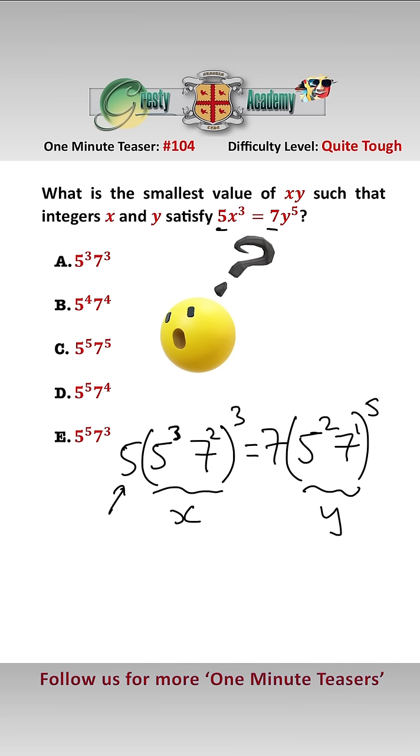therefore the smallest x is that and the smallest y is that. So therefore the smallest xy is 5 to the power of 5 times 7 cubed, which is answer E.